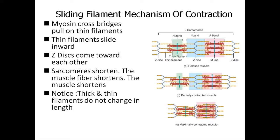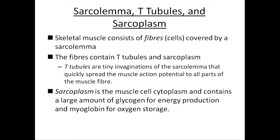The sliding filament mechanism of contraction: myosin cross bridges pull on the thin filaments, and the thin filaments slide inwards so the Z-discs come towards each other. As the sarcomere shortens, the muscle fiber shortens and the muscle effectively contracts. Note that the thick and thin filaments don't change length — they just slide over one another. The sarcolemma, T-tubules, and sarcoplasm are all involved in this process.